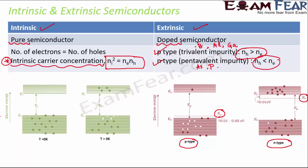At a temperature of zero Kelvin, an intrinsic semiconductor behaves like an insulator because electrons cannot jump from the valence band to the conduction band. However, at temperatures greater than zero Kelvin, when we increase the temperature, electron-hole pairs are formed. These electron-hole pairs constitute current, so the semiconductor conducts current at temperatures greater than zero Kelvin.